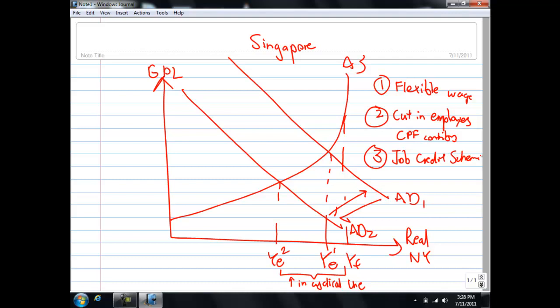The AS curve, especially the short run AS curve, takes into account the aggregate cost of production. With a flexible wage scheme, you allow the firm to cut the wages of the workers they hire. When that happens, the aggregate cost of production that the firm faces falls. This leads to the fall in our AS curve from SRAS1 to SRAS2.